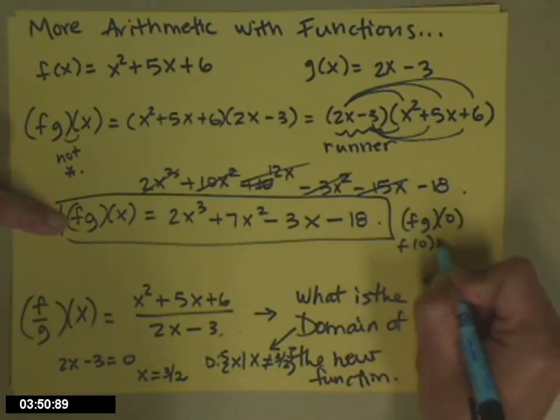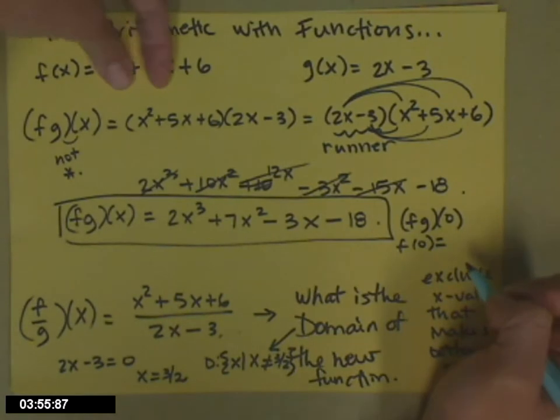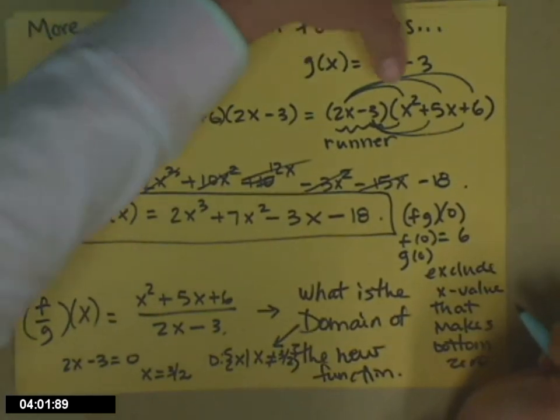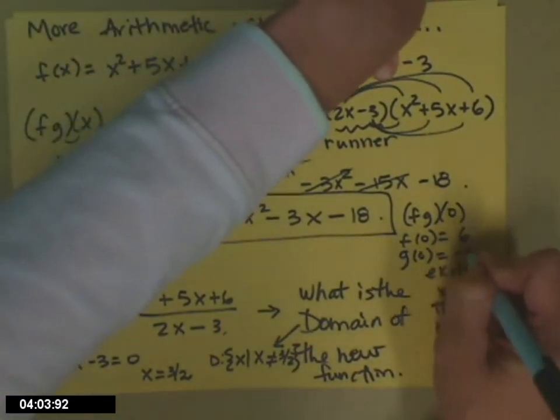If you find what f of 0 is, which is super easy because it just marks off every term that has an x in it, so f of 0 is 6. G of 0, same thing. 0 in for the x wipes out that term, so g of 0 is negative 3.